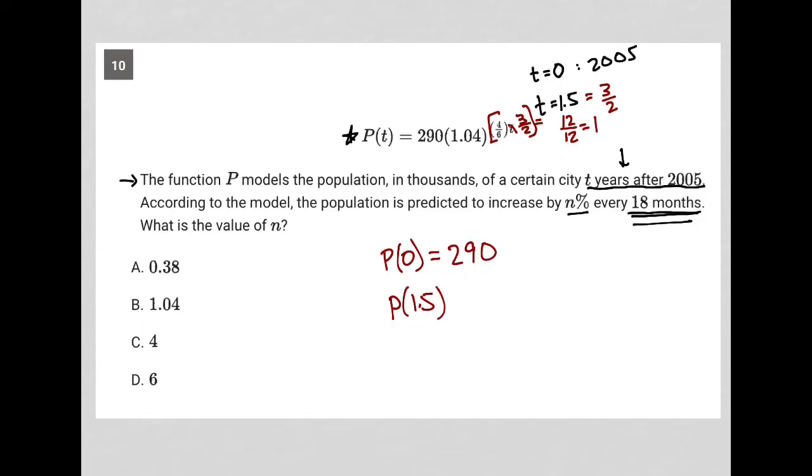So that turns into 290 times 1.04 to the first power, which is not important to write. So then I have the exact same number that I started off with here is 290. Sorry for erasing that on accident. But I'm just multiplying that 290 by 1.04.